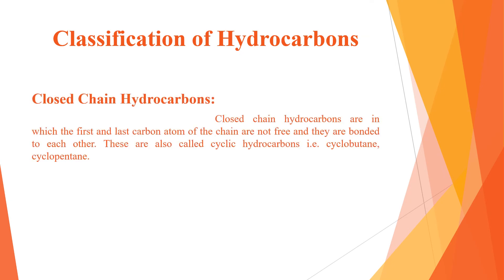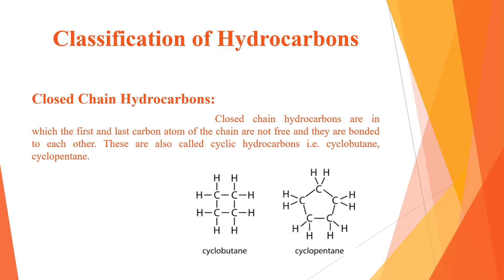Closed chain hydrocarbons are those in which the first and last carbon atom of the chain are not free — they are bonded to each other. They are also called cyclic hydrocarbons. Examples include cyclobutane and cyclopentane. As we can see in the image, the first and last carbon atoms are attached to each other, forming a cycle.